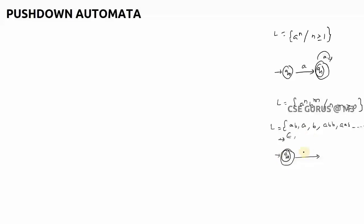You can construct a finite automata for a^n b^m: take q0 as initial and final state (for epsilon), add a self-loop on 'a' at q0, then transition to q1 on 'b' with a self-loop on 'b' at q1, making q1 also a final state. This is because once you get a 'b' you should not see any 'a' again, so we move to q1. This correctly accepts the language a^n b^m where n, m ≥ 0.